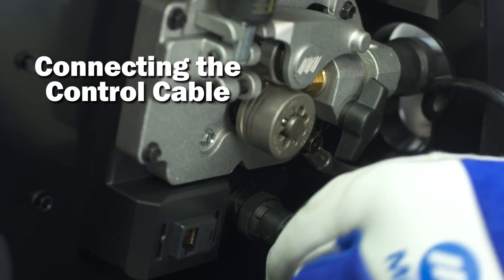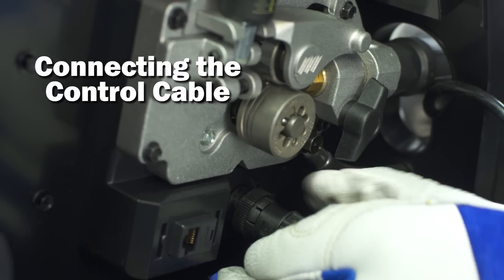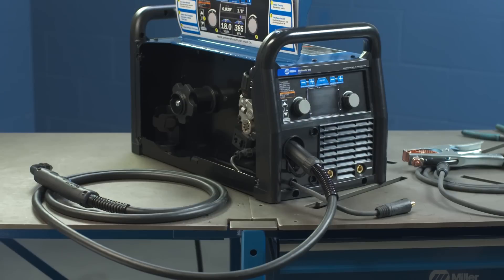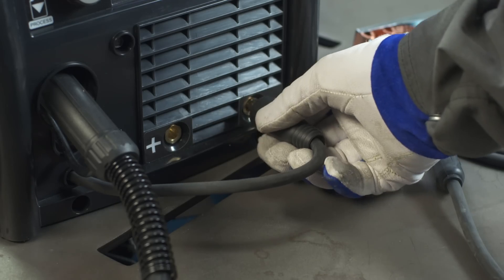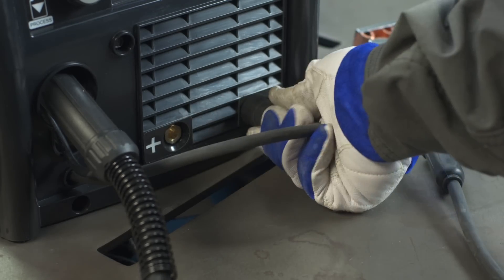Connect the control cable to the 4-pin connection. Twist the collar to tighten. While the machine is still off, insert the drive lead into the negative receptacle and turn clockwise to tighten.